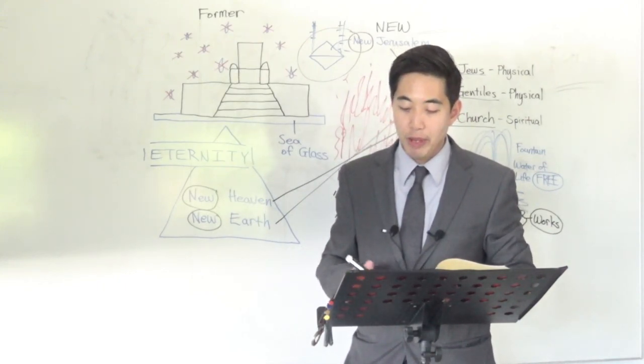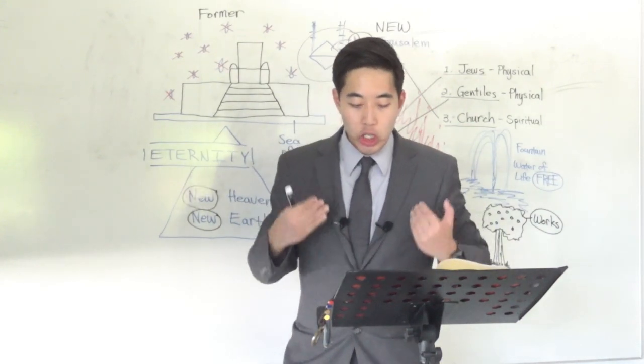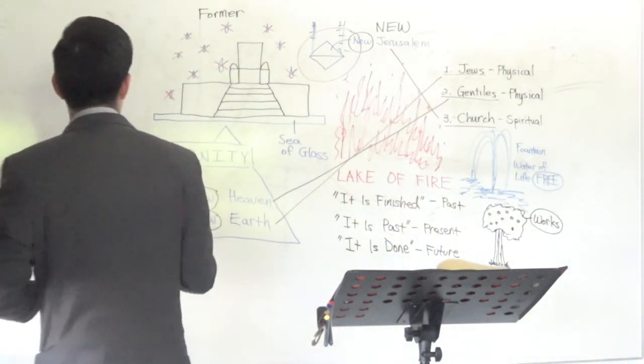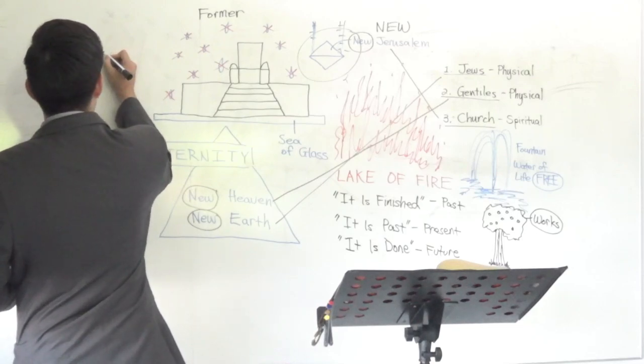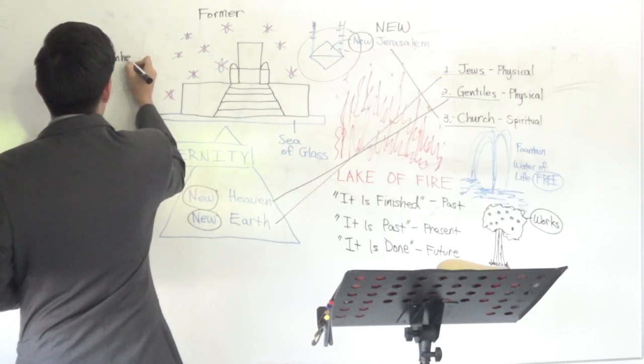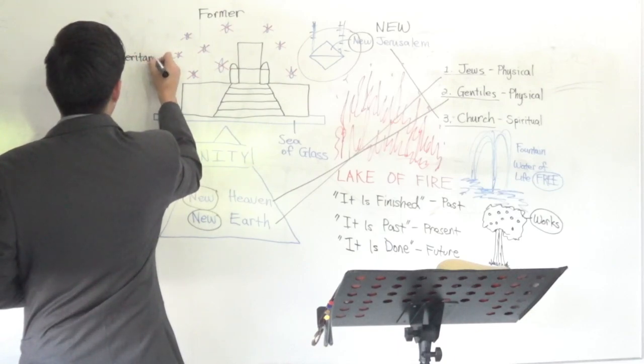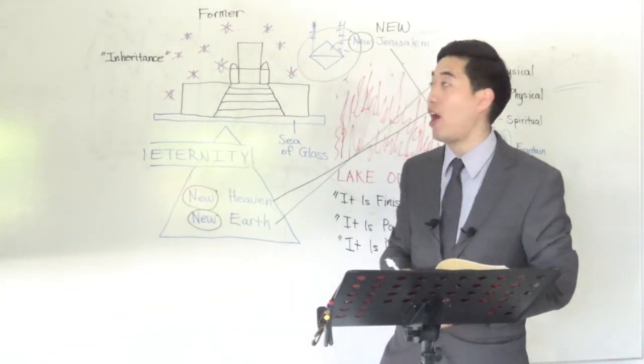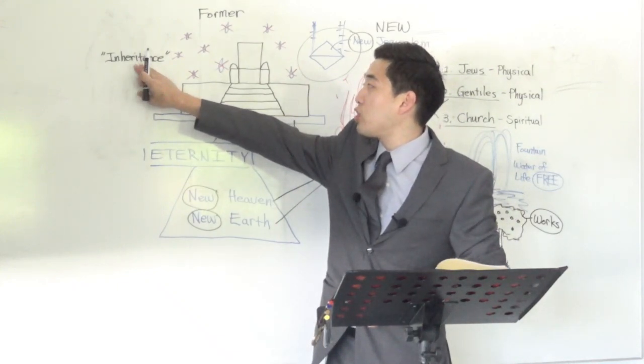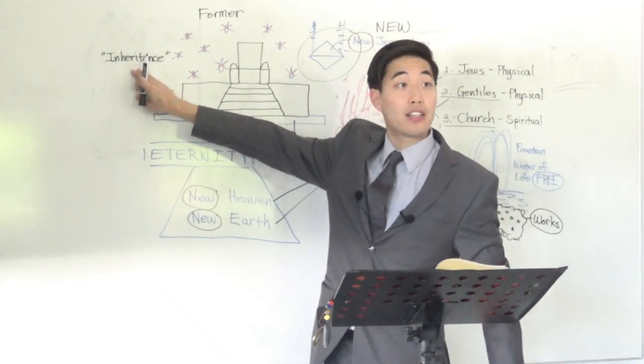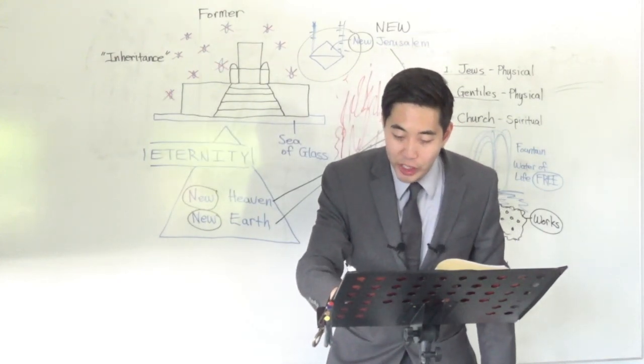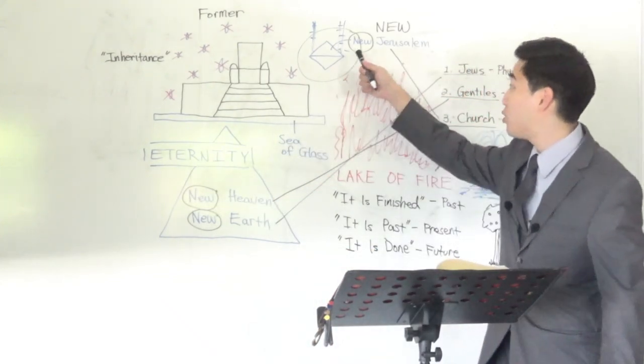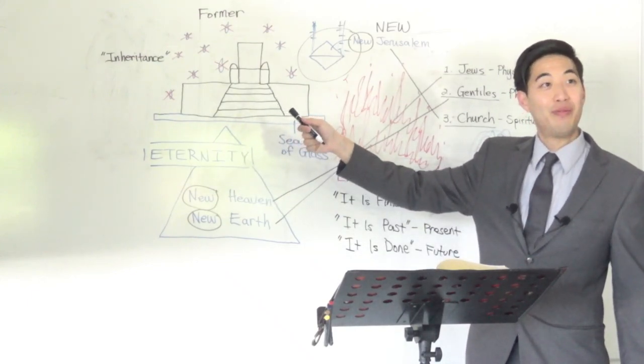He that overcometh, so a person has to overcome, shall inherit all things. Look at that, all things. A Christian is promised the inheritance, right? Now, we're not going to turn to these verses for time's sake. But if you go to Galatians chapter 5 and 1 Corinthians chapter 3, the verse shows that Christian church have the inheritance, and it's all things. Now, if God puts all things here at verse 7, that's describing what? All of verses 1 through 7. That new heaven, new earth, new Jerusalem, everything in it, we inherit it. How about that?